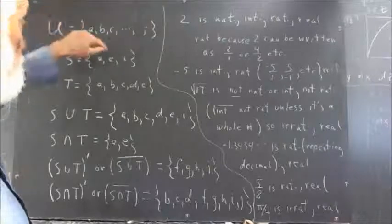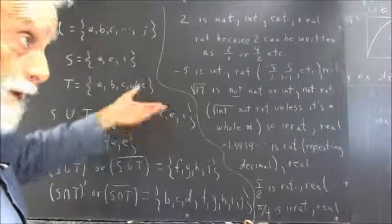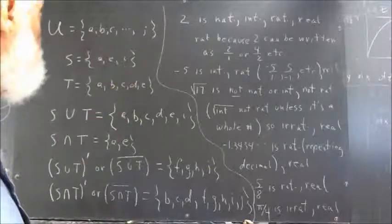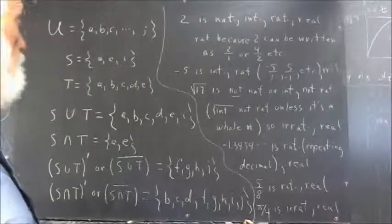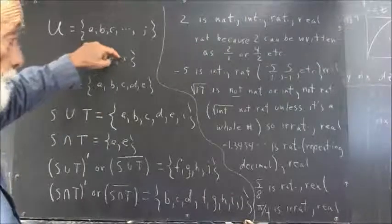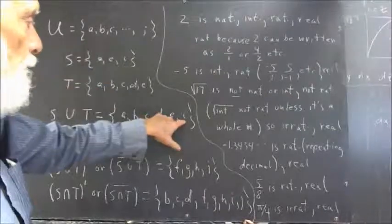E does occur in S, so it's included automatically. It also occurs in T, but that doesn't make any difference. And then the only other element in either of these sets that hasn't been considered is I, and that's going to be included.